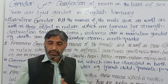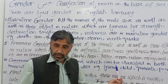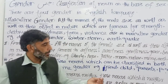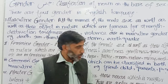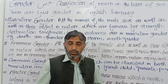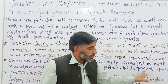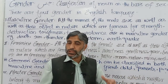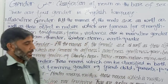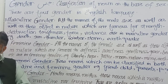Jaise 'friend' — dost chahe female ho ya male ho, lekin 'friend' dono ke liye istemal kar sakte hain. 'Child' — bacha ho ya bachi, English mein sirf 'child' dono ke liye istemal hoti hai. 'Parent' — chahe maa ho ya baap. Isi tarah 'people,' 'student,' 'teacher,' 'doctor,' 'person' — jo male aur female dono ke liye mushtarak taur par istemal hote hain, woh common gender kahlaate hain.